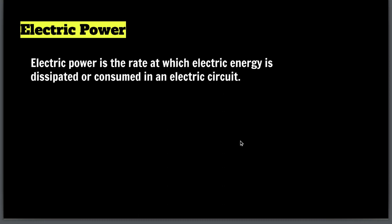Electric power has one definition but many formulas. Electric power is the rate at which electric energy is dissipated — meaning consumed — in an electric circuit. How much energy we are consuming is electric power. The basic formula from 9th grade: power P = work / time.